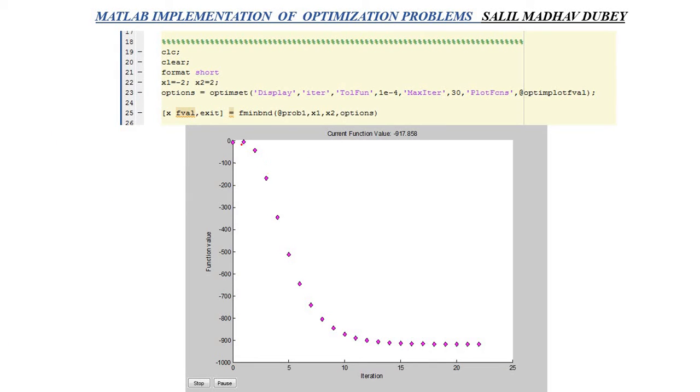Now suppose I want to plot how these values are changing. For this there is an additional function. In the options, inside optimset, I add at the rate optimplotfval. This command, when I run it, will give me a function graph where I can see graphically how as I increase iterations, my value is going down. This is a very good tool for comparing different solvers.